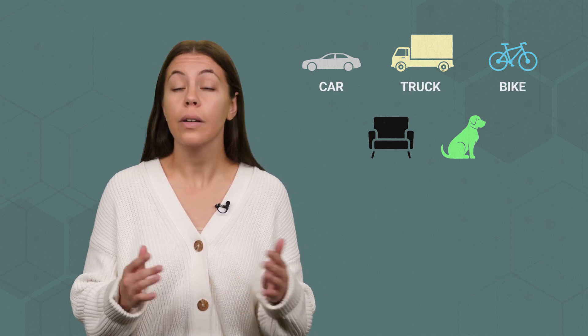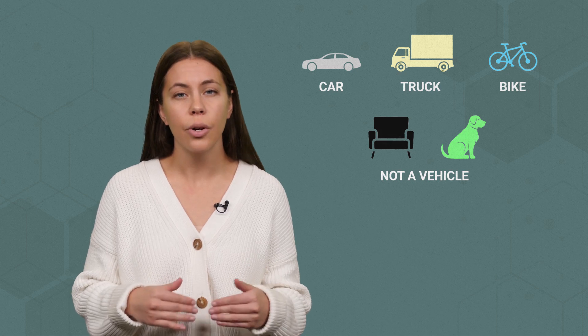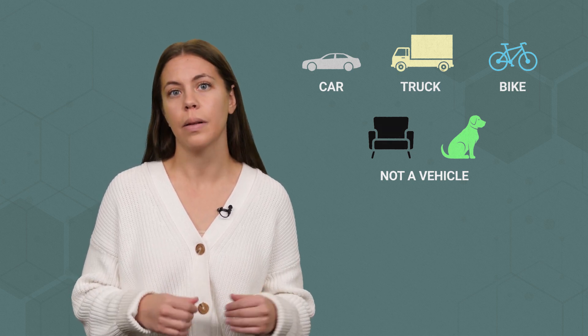For example, to develop a system that identifies different types of vehicles, the training dataset might include images of cars, trucks, bicycles, and random objects like furniture or animals. Each image comes with a label, such as car, truck, or not a vehicle. By using these labels, the system refines its internal weightings, enhancing its ability to accurately recognize and classify vehicles in future inputs. That's a basic example.